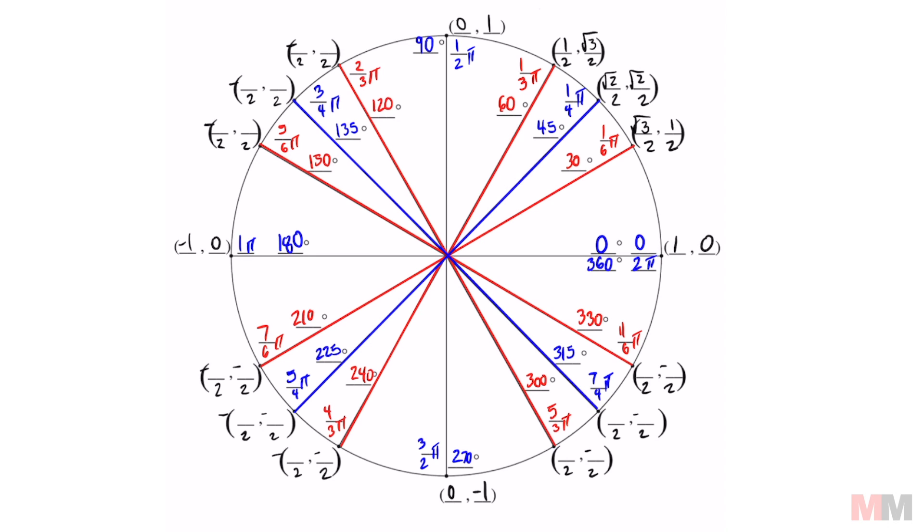Like if you remember quadrant one, the rest of it is pretty much copy and paste. You just have to know which points match. If you look at quadrant four, we'll do this one first. Quadrant four.